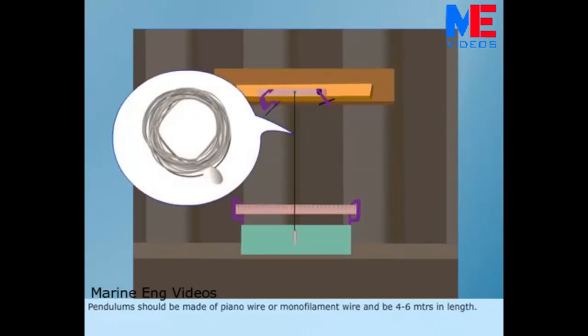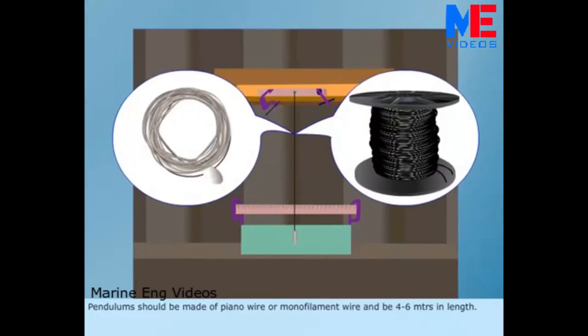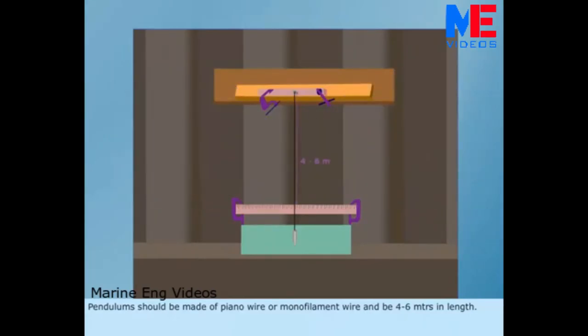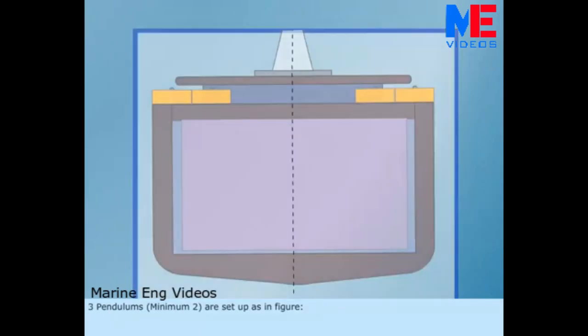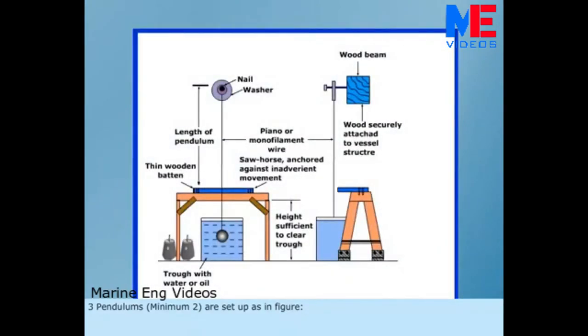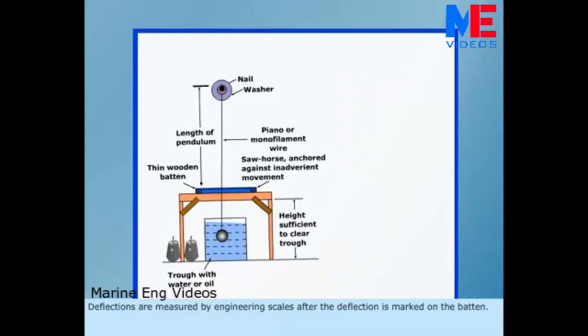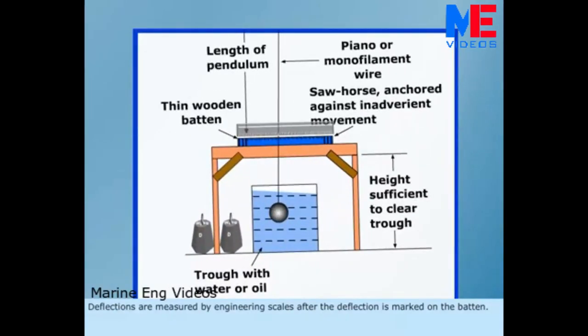Pendulums should be made of piano wire or monofilament wire and be 4 to 6 meters in length. Pendulum length is accurately measured and recorded. Three pendulums or minimum two are set up as in figure. A trough filled with water is provided to dampen oscillations. Deflections are measured by engineering scales after the deflection is marked on the batten.